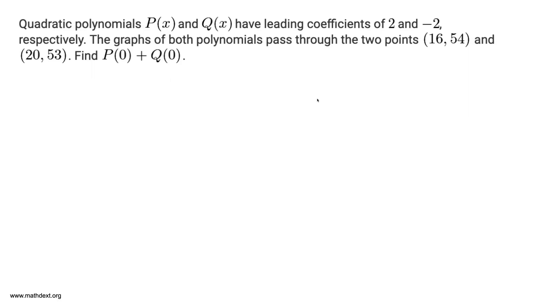Quadratic polynomials p(x) and q(x) have leading coefficients of 2 and negative 2 respectively. The graphs of both polynomials pass through the points (16, 54) and (20, 53). Find p(0) plus q(0).